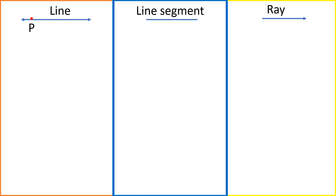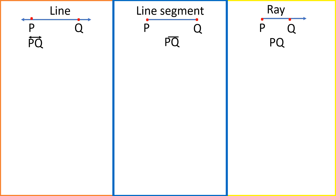For a line, we represent it as line PQ. For a line segment, there are two points P and Q which are both endpoints, and we represent it as line segment PQ. For a ray, there is one point P which is the starting point and one point Q on the ray, and it is ray PQ.